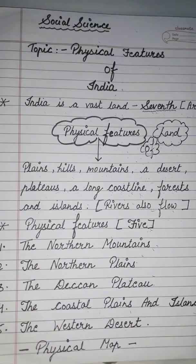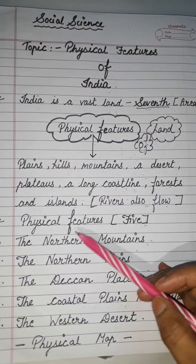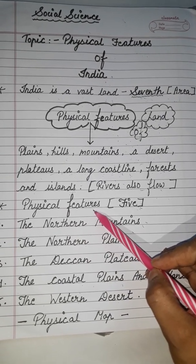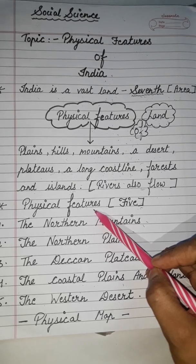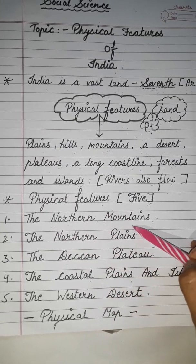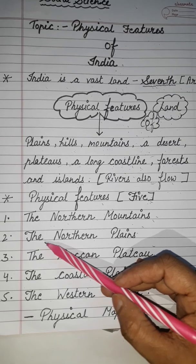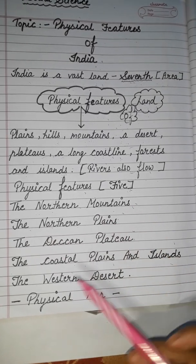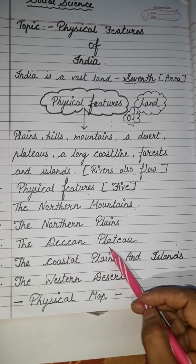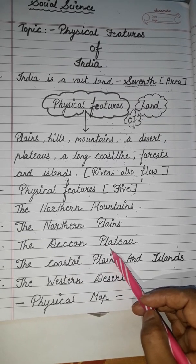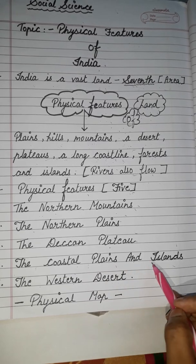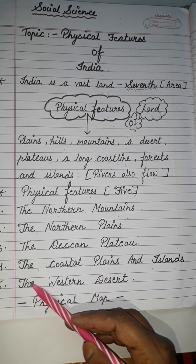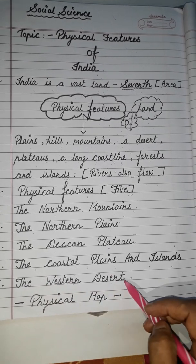On the basis of the physical features, India can be divided into five regions. Number one, the northern mountains. Number two, the northern plains. Number three, the Deccan plateau. Number four, the coastal plains and islands. And number five, the western desert.